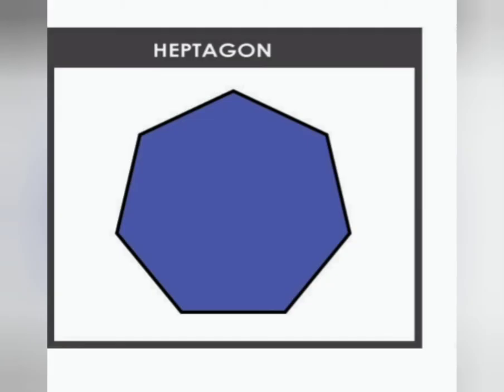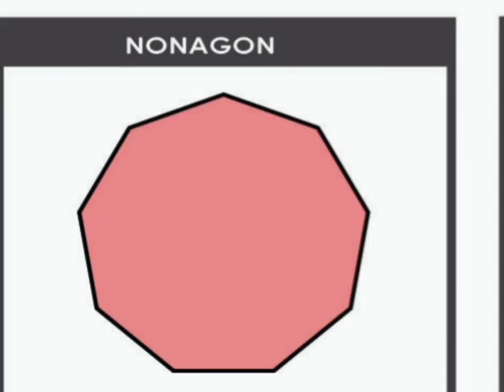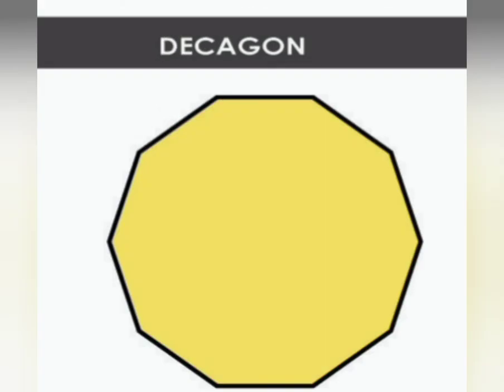And the shape with seven sides are called heptagon, and the shape with eight sides are called octagon. And the shape with nine sides are called nonagon, and the shape with 10 sides are called decagon.